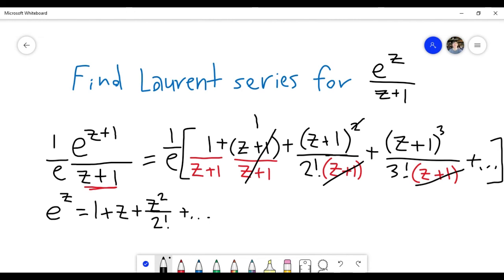For this next term, I have z plus 1. On the top, I have z plus 1 to the 3rd, so that's going to be z plus 1 squared. And then so on.